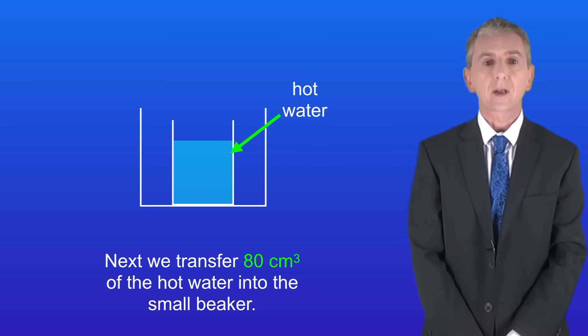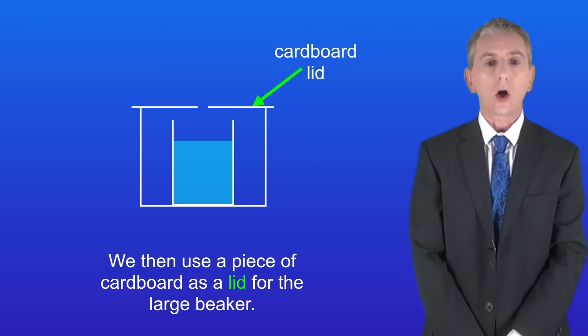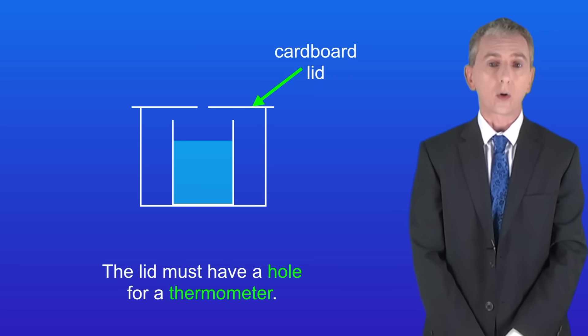Next we transfer 80 centimeters cubed of the hot water into the small beaker. We then use a piece of cardboard as a lid for the large beaker and the lid must have a hole for a thermometer.